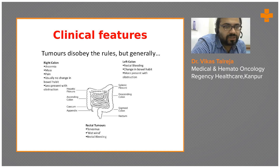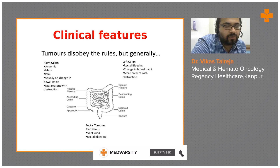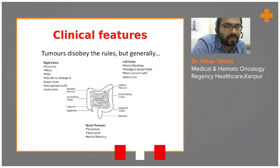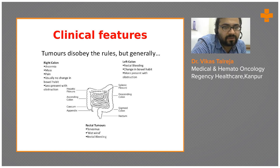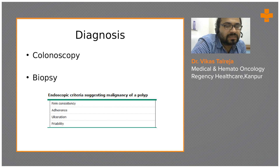Tumors usually disobey the rules, but generally for right colonic tumors you suspect the diagnosis when the patient has anemia, an abdominal mass, or pain. Right colon tumors typically don't present with any change in bowel habit and rarely present with obstruction. On the other hand, tumors in the splenic flexure, descending colon, sigmoid colon, and rectum mostly present with obstruction, rectal bleeding, and change in bowel habit. The clinical features direct us as to which side the tumor is on.